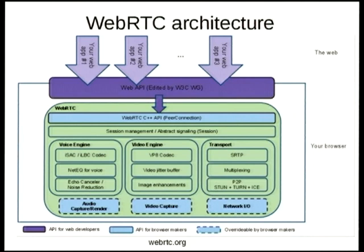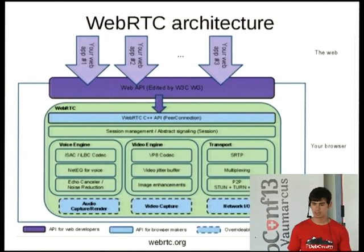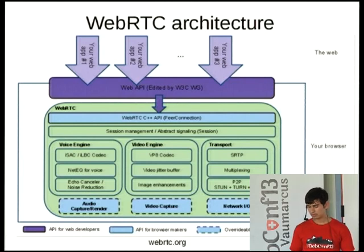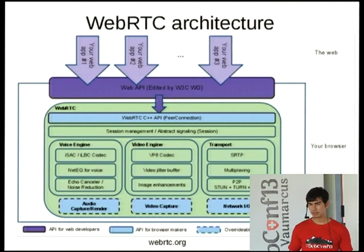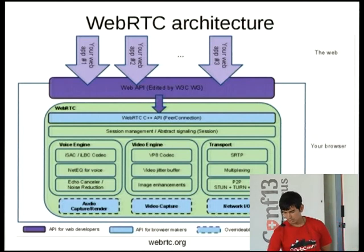WebRTC has many components, such as the codecs and the API. For example, it doesn't have signaling — the user has to provide his own solution, but the framework provides a possibility to integrate it. You can use SIP for signaling, you can use XMPP/Jabber or something else. So it provides all the framework for real-time communication.